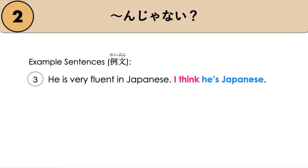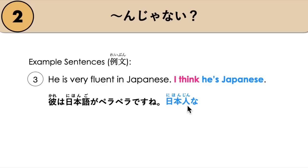Next example: 'He is very fluent in Japanese. I think he's Japanese.' 彼は日本語がぺらぺらですね. Since Nihonjin is a noun, we add na: Nihonjin na, followed by んじゃないですか for 'I'm guessing'. So: 日本人なんじゃないですか?